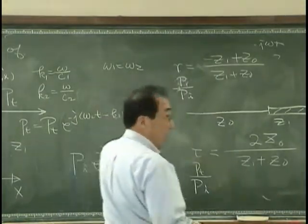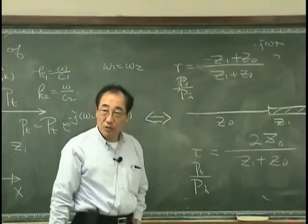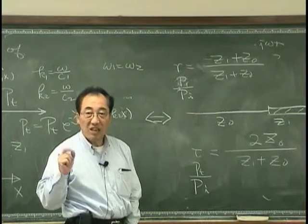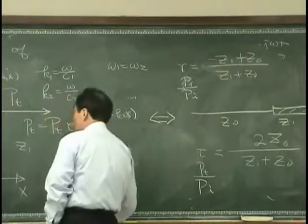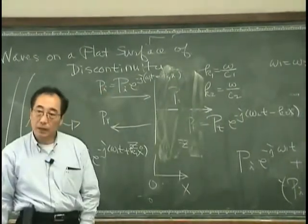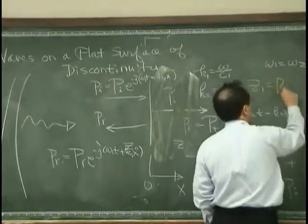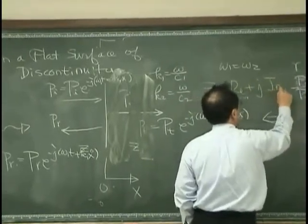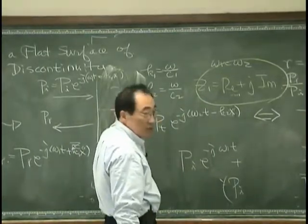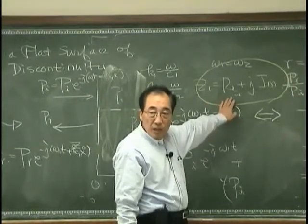That's all related with power transmission coefficient, not just simply amplitude transmission coefficient. That has certain meaning. For example, when we have sound-absorptive material, that is the case when Z1 has certain value in real part and imaginary part. We can measure the characteristic impedance of sound-absorptive material through its real part and imaginary part.